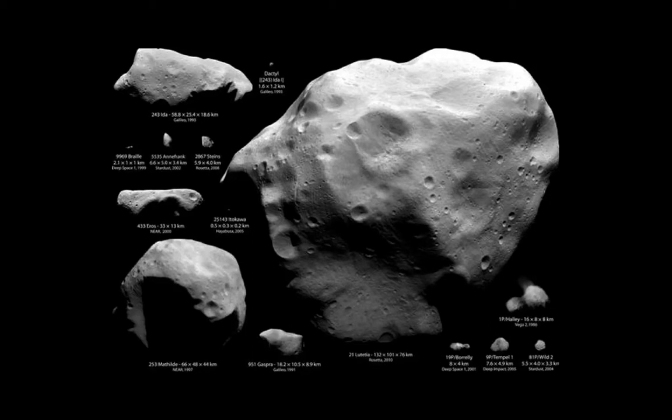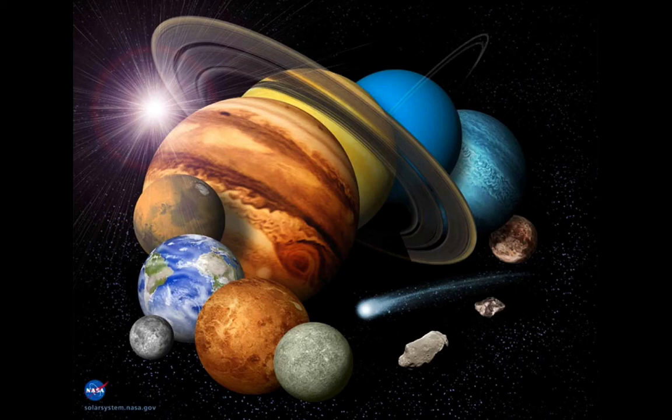Once objects have enough self-gravity to achieve a circular shape, along with a couple of other important criteria, we call them planets. Planets can have sizes of up to 13 times the mass of Jupiter, the largest planet in our solar system, and still be called planets.